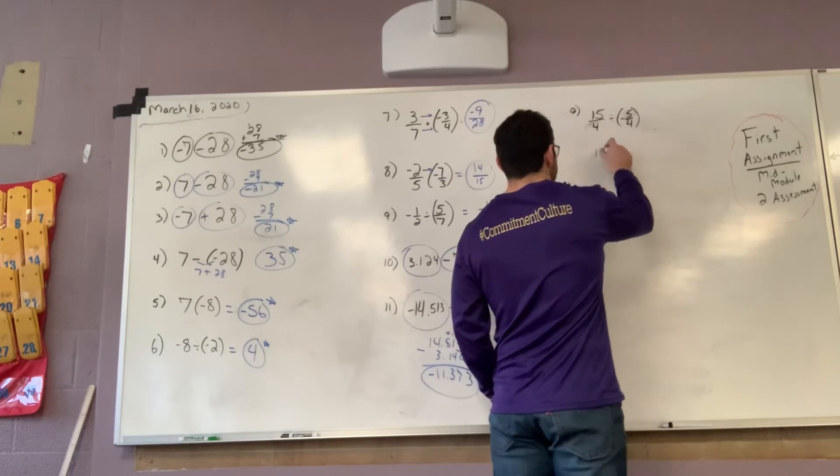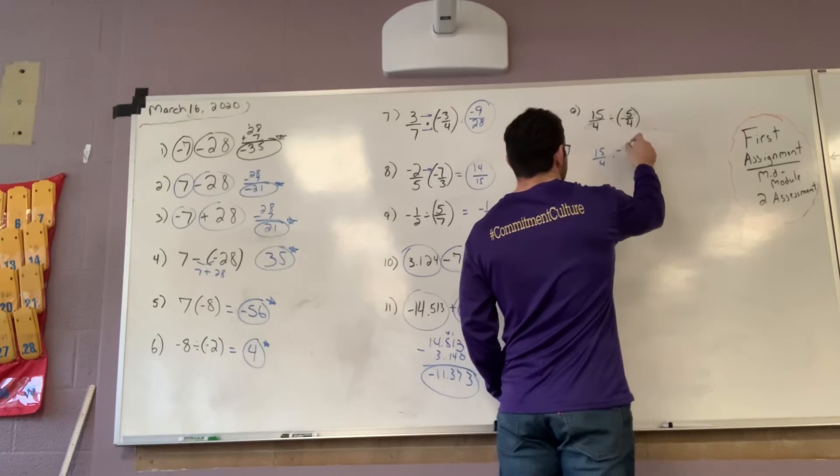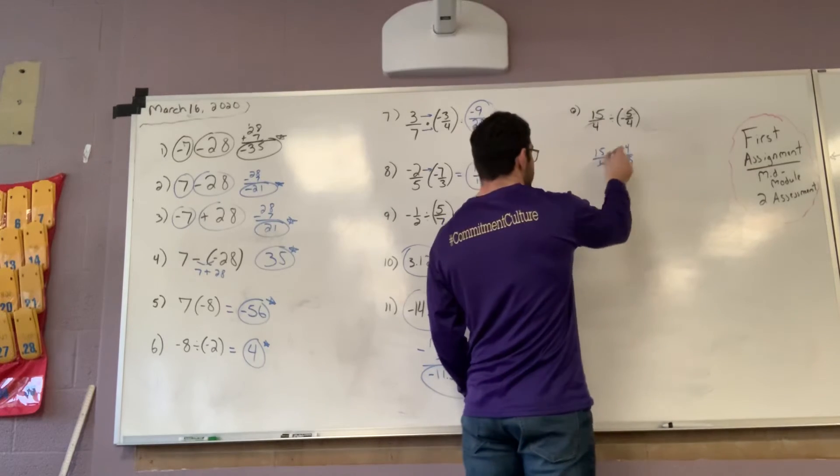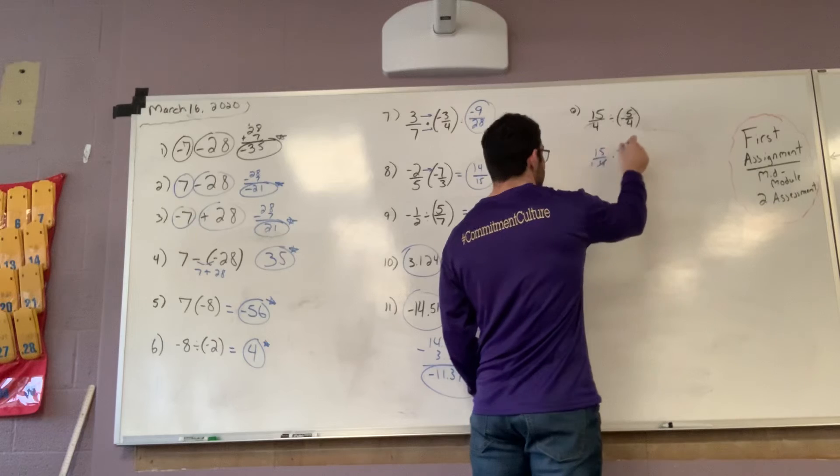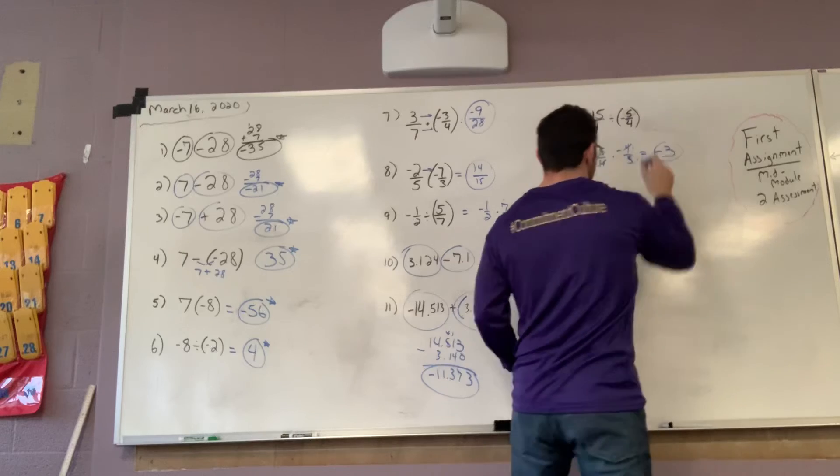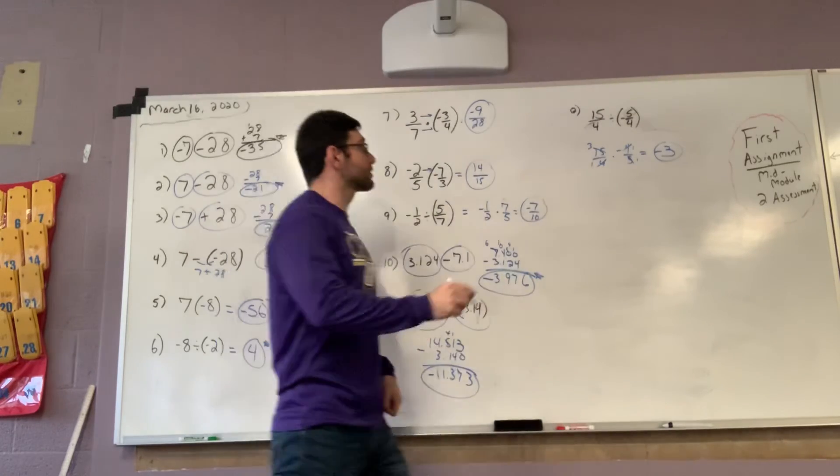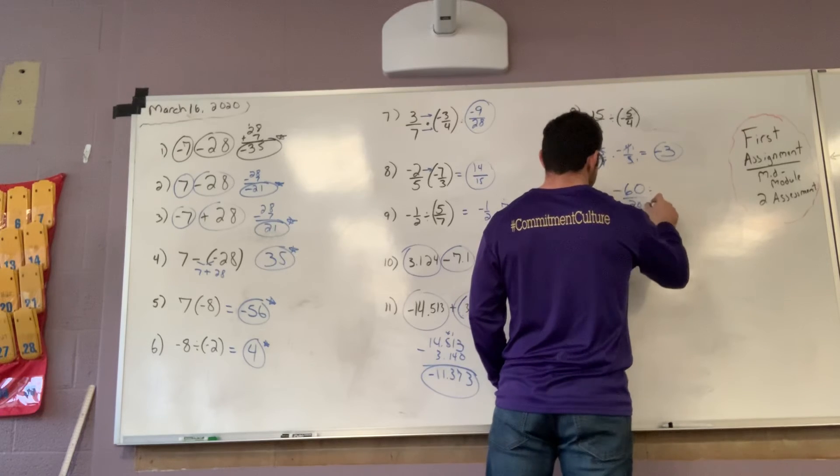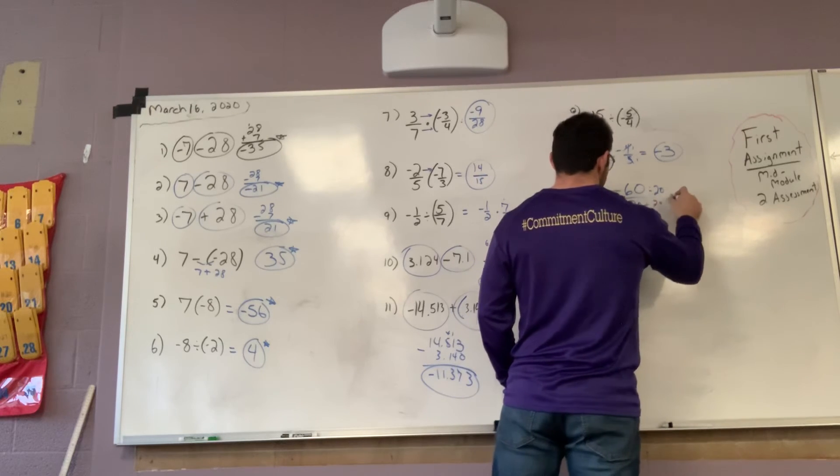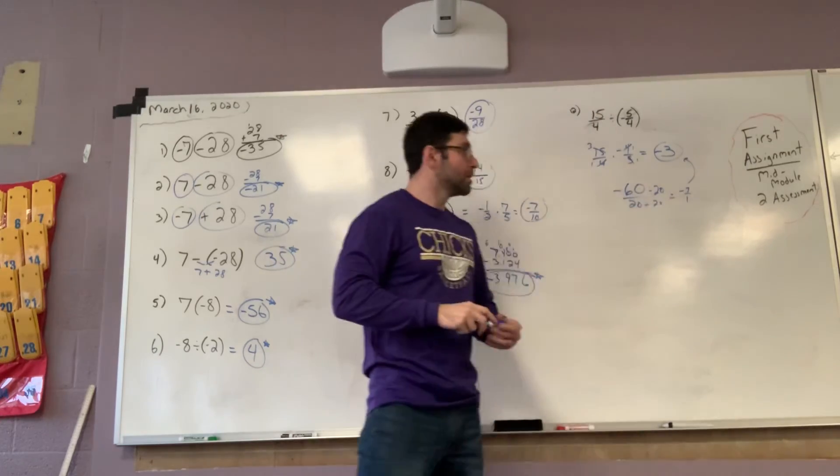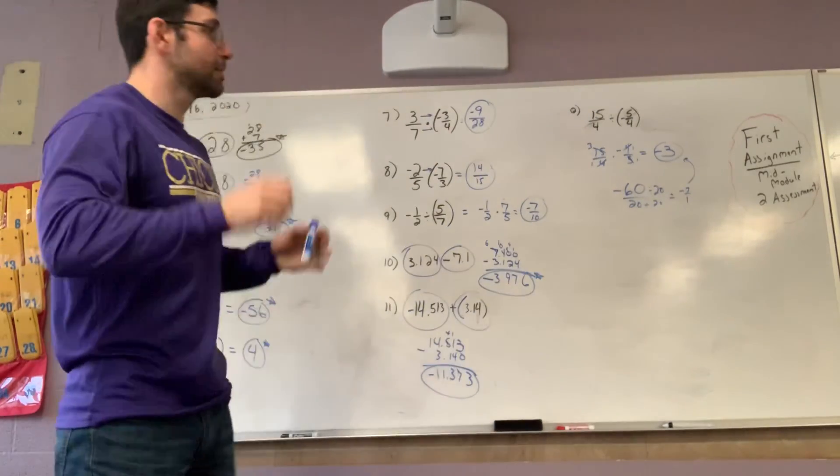Keep change flip. 15 fourths multiplied by negative 4 fifths. One of the things that I've taught you is cross simplification. 4s go in both, so those are 1s. 5 goes in 3 times, so that's a 1. So 3 times negative 1 is negative 3. You could have also gotten negative 60 divided by 20, which then simplifies down by 20s to negative 3 over 1, which is negative 3. Okay, that takes care of that. Blam.